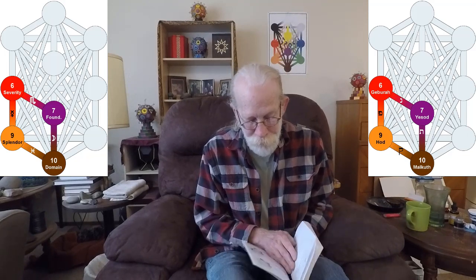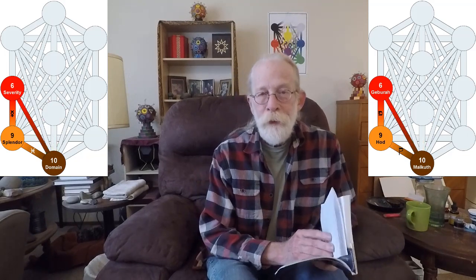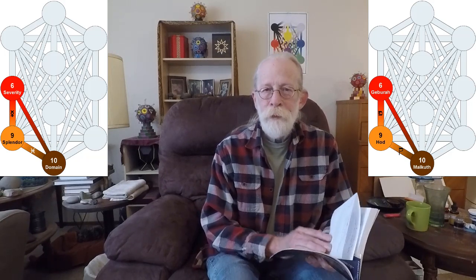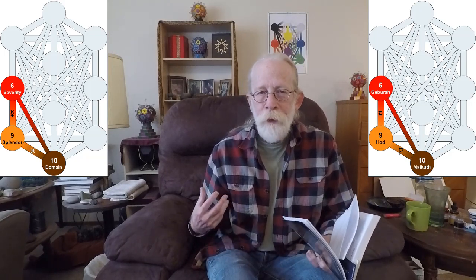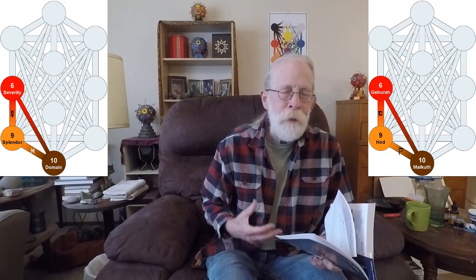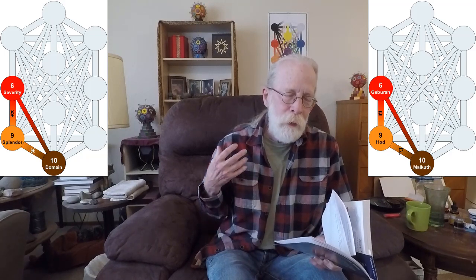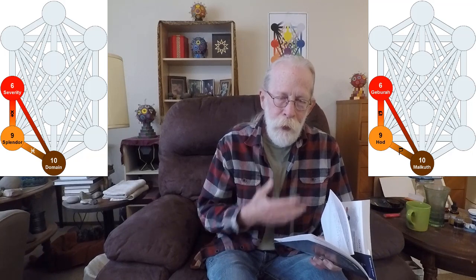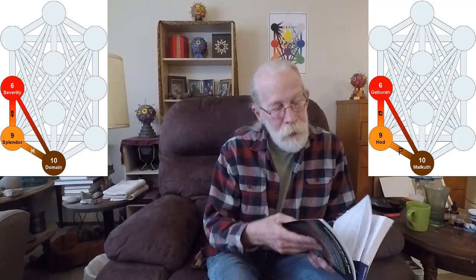The next one is gate 169, and it goes from Hod along Pisces to Malkuth, up that hidden path to Gebura, and down Mercury to Hod, and then back around.